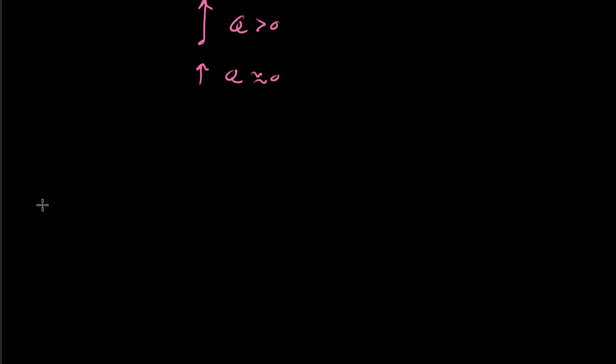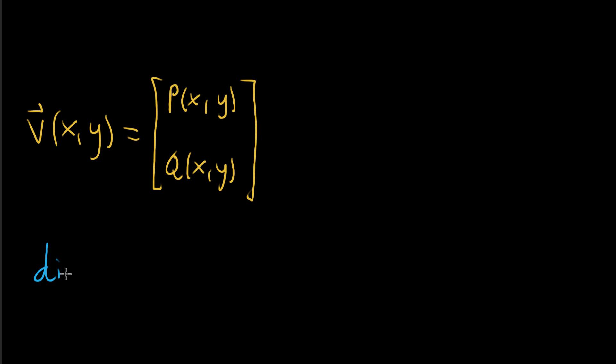So just to write it all out, if we have a vector-valued function of x and y, and it's got both of its components, we've got p as the x component of the output, that first component of the output, and q, and we're looking at both of these at once. The way that we compute divergence, the definition of divergence of this vector-valued function, is to say the divergence of v as a function of x and y is actually equal to the partial derivative of p with respect to x plus the partial derivative of q with respect to y.